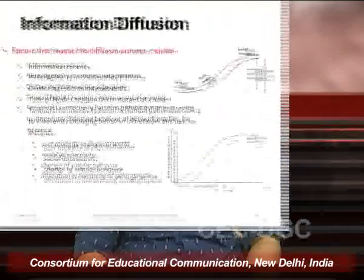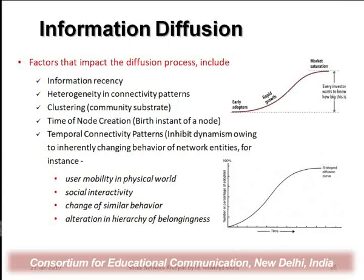Temporal connectivity patterns are equally useful for deeper analysis of who actually boosted a trend or caused it to decline. Different aspects — user mobility in the physical world, social interactivity, change of similarity in behavior, and alteration in the hierarchy of belongingness — all define how steep or slanted the S-shaped diffusion graph will be.